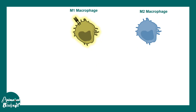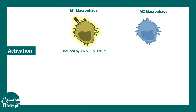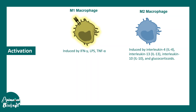Let's quickly recap what we learned overall. M1 and M2 macrophages differ in terms of activation. M1 macrophage is activated by the classical pathway, which is induced by interferon gamma, lipopolysaccharide from the bacterial membrane, and TNF-alpha. M2 macrophages are activated by interleukin-4, interleukin-13, and interleukin-10.